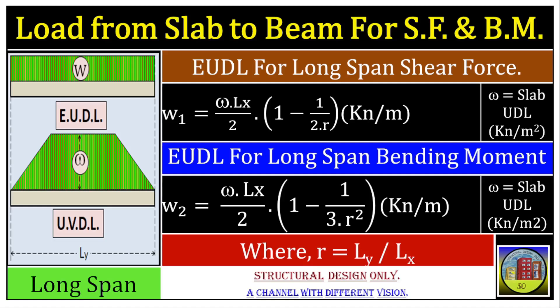Moving on to slide number three, we'll delve into the specifics of EUDL for a slab beam. The ratio of LY to LX is represented by the letter R, calculated as R equals LY divided by LX. The trapezoidal load on the slab is what we convert into an equivalent uniformly distributed load, designated as W1 and W2, acting on the long beam, with units of kN per meter.